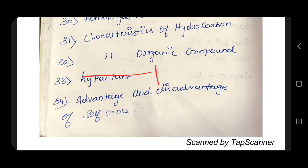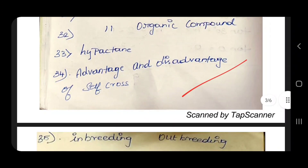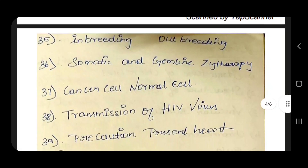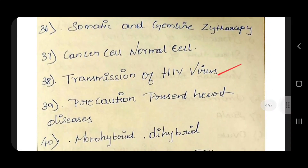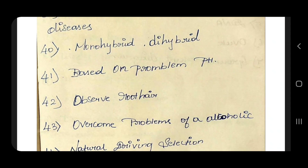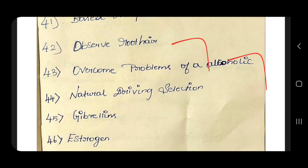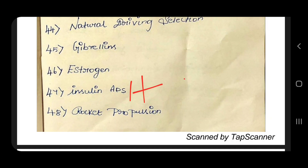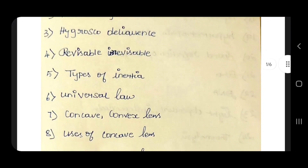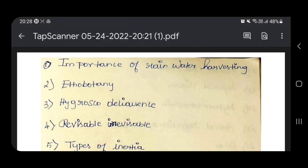Homologous series, categories of hydrocarbon, categories of organic compound, IUPAC name. Advantage and disadvantage of self and cross pollination. Somatic and germline gene therapy. Normal cell cancer cell, transmission of HIV virus. Precautions for heart disease. pH problems, root hair observation, overcoming alcoholism, natural drug isolation, gibberellin 4-mark, estrogen 4-mark, insulin, ADH. Thank you, share and subscribe.